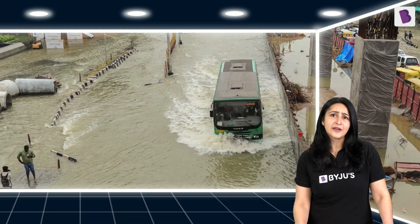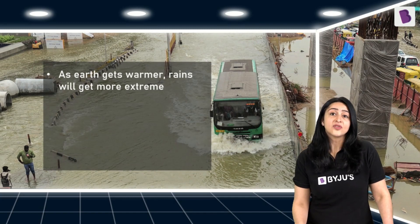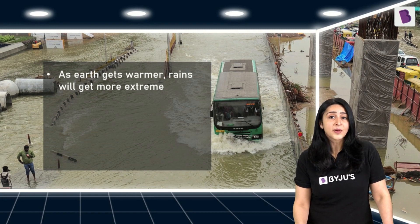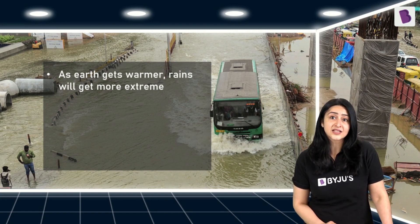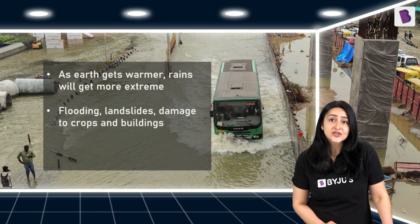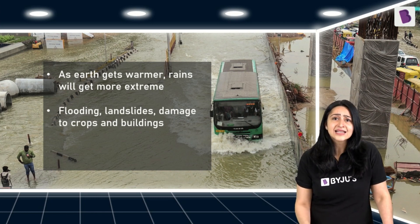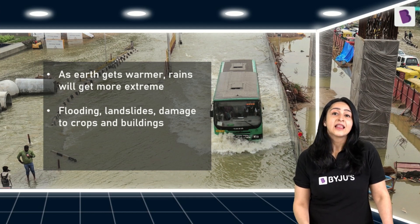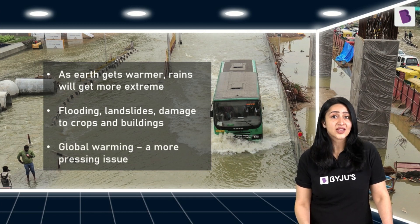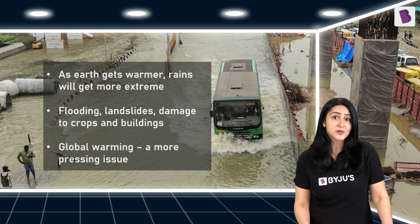Scientists believe that as the Earth gets warmer, the rains will become more and more extreme. They are also researching other ways in which global warming is affecting the weather and causing extreme and erratic rains. These extreme rains cause flooding, landslides, damaged crops and buildings, and even cause deaths. This makes global warming and climate change an even more pressing issue than it was believed to be a few decades ago. Do you think humans will be able to control this in time? Comment your thoughts below.